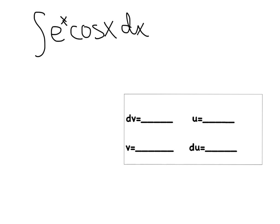We spent a lot of time talking about how to identify integration by parts — usually it's the product of an algebraic function like a polynomial and a transcendental function like e or cosine. But this doesn't fit that mold. This is actually the product of two transcendental functions, so it's kind of an outlier.